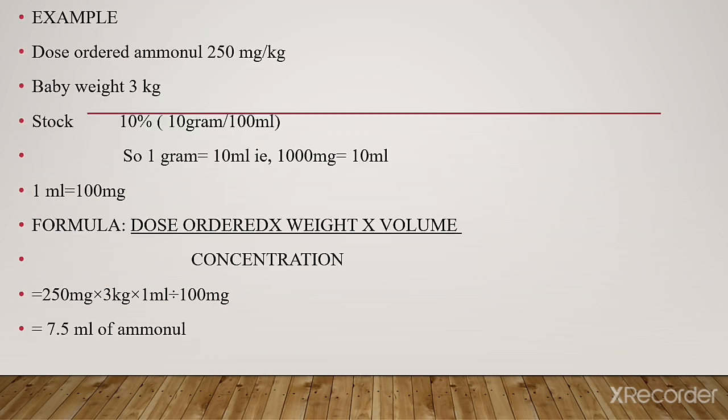Let's see the example for preparing aminol. Dose ordered: 250 mg per kg of aminol. Baby's weight: 3 kg. Stock: 10% — meaning 10 grams in 100 ml, so 1 gram equals 10 ml. Since 1 gram equals 1000 mg, 1000 mg equals 10 ml, therefore 1 ml equals 100 mg.